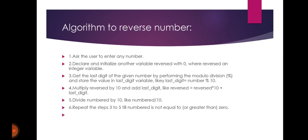Algorithm to reverse a number. By writing a program to reverse a number, we first write the algorithm, then the flowchart, then the code. The first step of the algorithm: ask the user to enter any number. Second, declare and initialize another variable called reverse, set to 0. We take a temporary variable with value 0 and reverse as an integer variable.